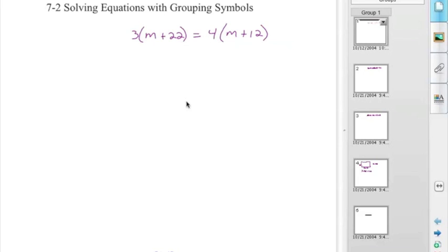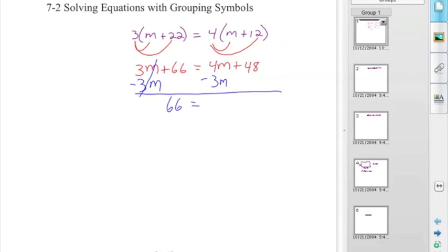So getting right to it, you should notice that you have 3 times the quantity m plus 22. That should key you into looking to use the distributive property. So we will use the distributive property, and you're left with 3m plus 66, and on the other side 4m plus 48. Now we look to move the variables to one side of the equation and the numbers to the other side. In this particular equation, I have 3m on the left-hand side of the equal sign and 4m on the right-hand side. In order to make life easier for us, we will move the 3m by subtracting it from both sides. As noted from the last lesson, 4m minus 3m is positive m, which makes our lives a little bit easier.